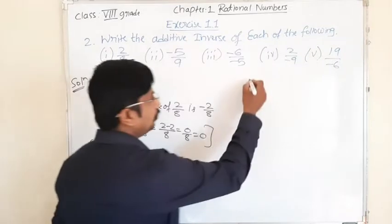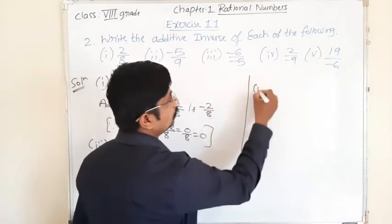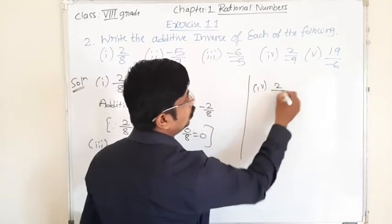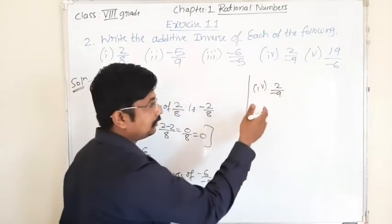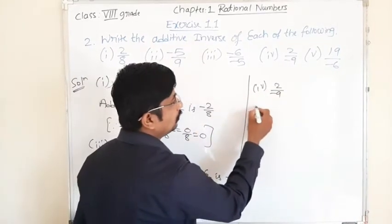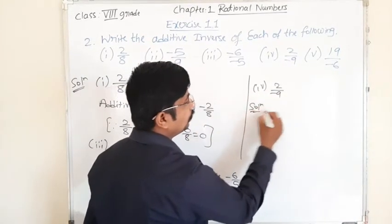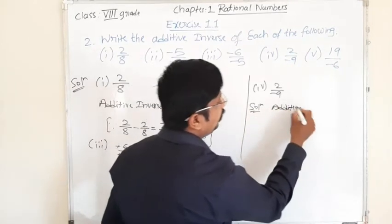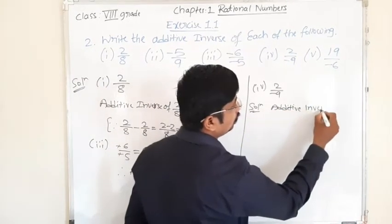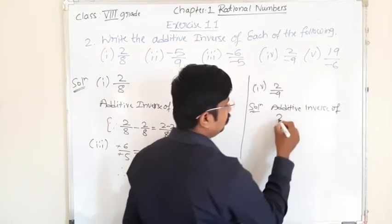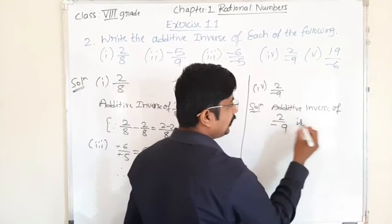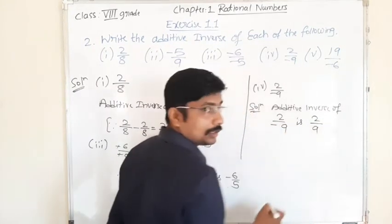Okay, fourth one. 2 by minus 9 is there. Therefore, solution: additive inverse of 2 by minus 9 is 2 by 9.